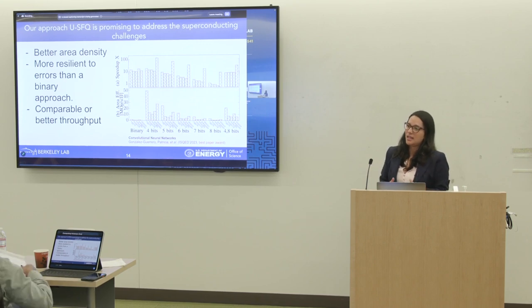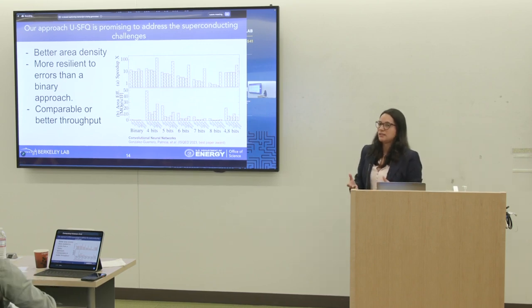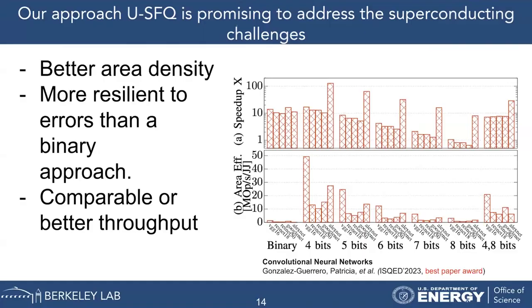Overall, Unary SFQ gives us better area density, but it also has other advantages: it is more resilient to errors than a binary approach, and we can reach comparable or better throughput. We are not sacrificing throughput when comparing it with CMOS.